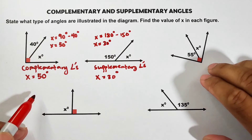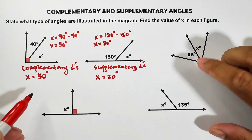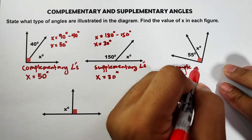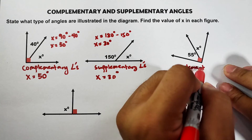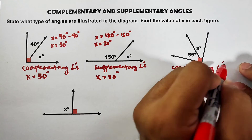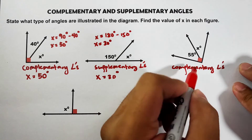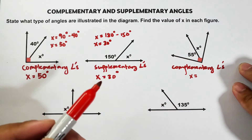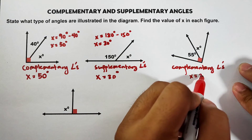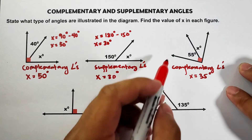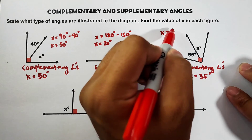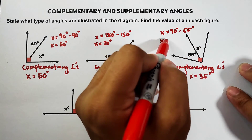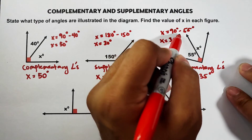So what about this one? This one is complementary angles. What is the value of x, or the measurement of this angle? This angle measures 35 degrees. Basically, x is equal to 90 degrees minus 55 degrees, so your x is 35 degrees.